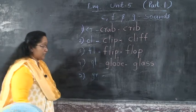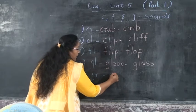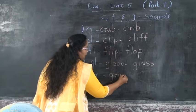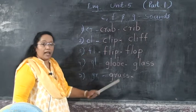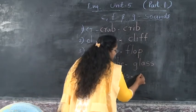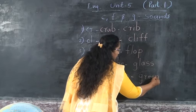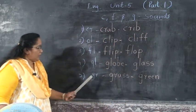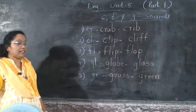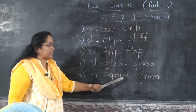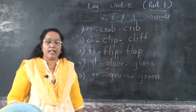Next is grass. Grass. What's the spelling of grass? GR — starting letter G-R-A-S-S. Grass. G-R-A-S-S. Next — green. G-R-E-E-N. Green. Say loud. Two words starting with GR: grass — G-R-A-S-S — and green — G-R-E-E-N.